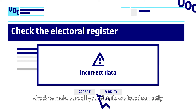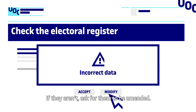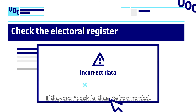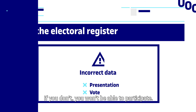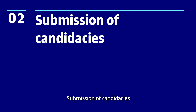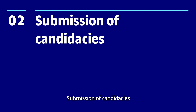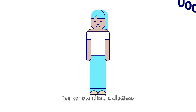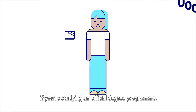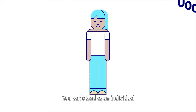Check the electoral register. When the electoral register is published on the election website, check to make sure all your details are listed correctly. If they aren't, ask for them to be amended — if you don't, you won't be able to participate.